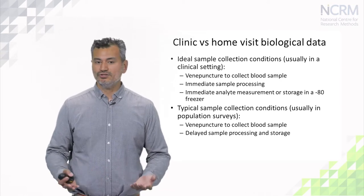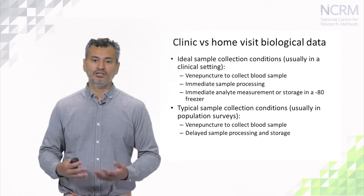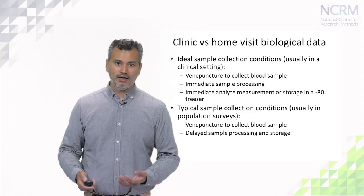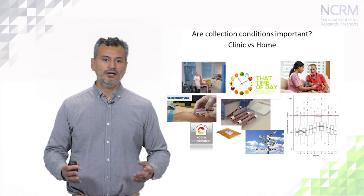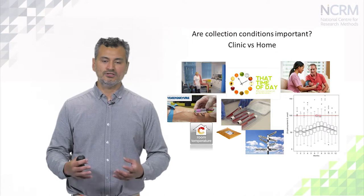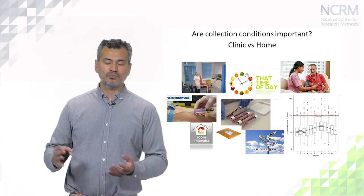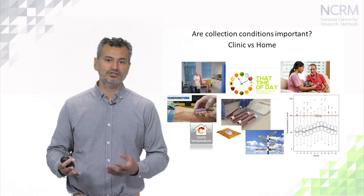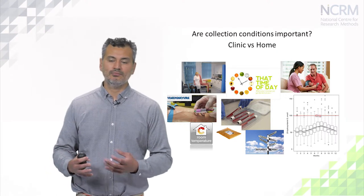In contrast, in population surveys, there is a delay in the processing and storage of that blood sample. We've got examples of the different conditions in which blood samples are taken and stored. In the top left-hand corner, we've got a nurse in a clinic setting — a very controlled environment where the blood drawn is immediately stored and processed in very high-quality ways. Whereas on the top right-hand corner, we've got a nurse taking blood from a participant at home, where the environmental factors are much more variable.